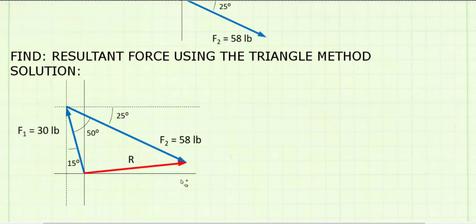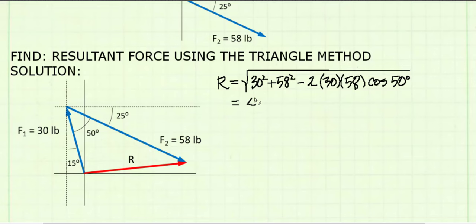I've added my vector diagram to my engineering paper, and now I can solve for the resultant force using the law of cosines. The units on 30 and 58 are in pounds and therefore my resultant force units are also in pounds, and I get 45.023 pounds. To three significant figures, R is 45.0 pounds.